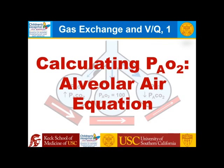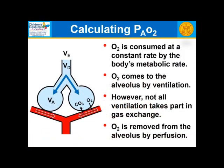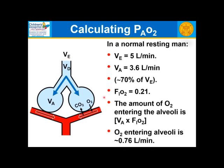Now, how do we calculate alveolar PO2? This is the alveolar air equation — pulmonary board exam material. Oxygen is consumed at a constant rate by the body's metabolic rate; it arrives at the alveolus by ventilation, not all of which participates in gas exchange; and it is removed by perfusion. For a normal resting man: minute ventilation is 5 L/min, alveolar ventilation is 70% of that, and FiO2 is 21%. Oxygen entering the alveolus per minute = alveolar ventilation × FiO2 = 3.6 × 0.21 = 0.76 L/min.